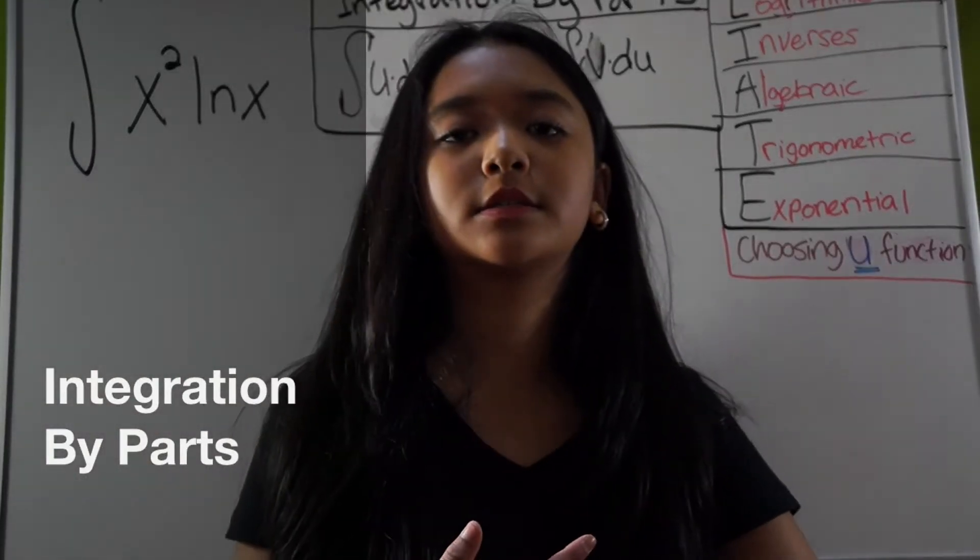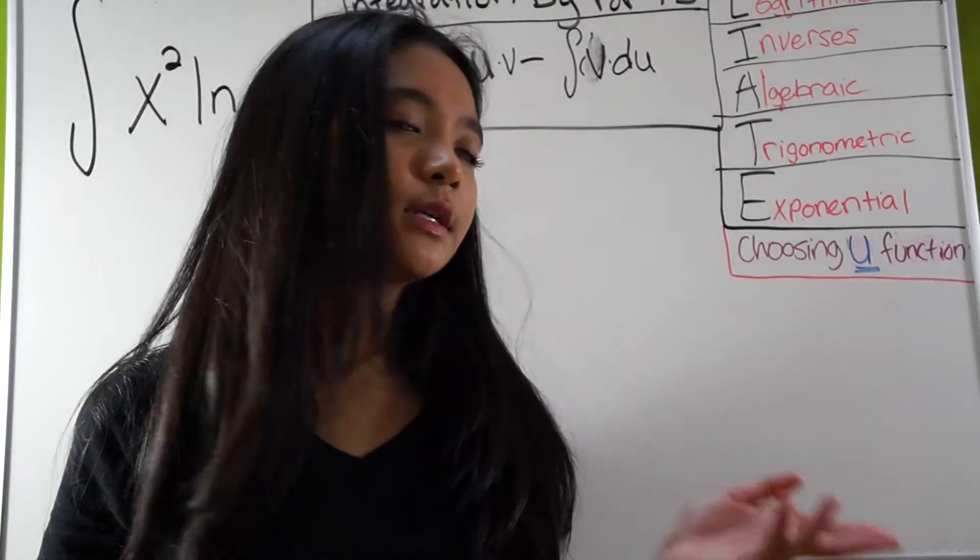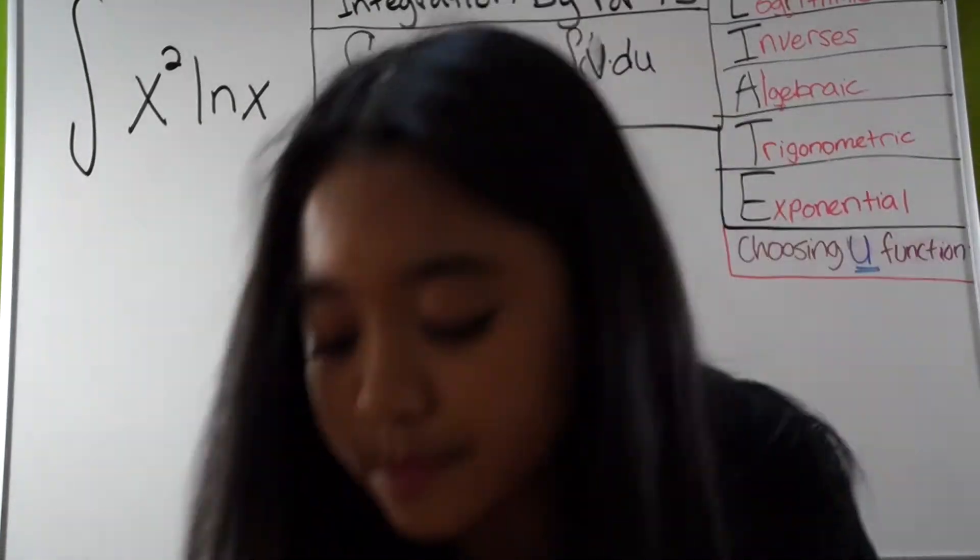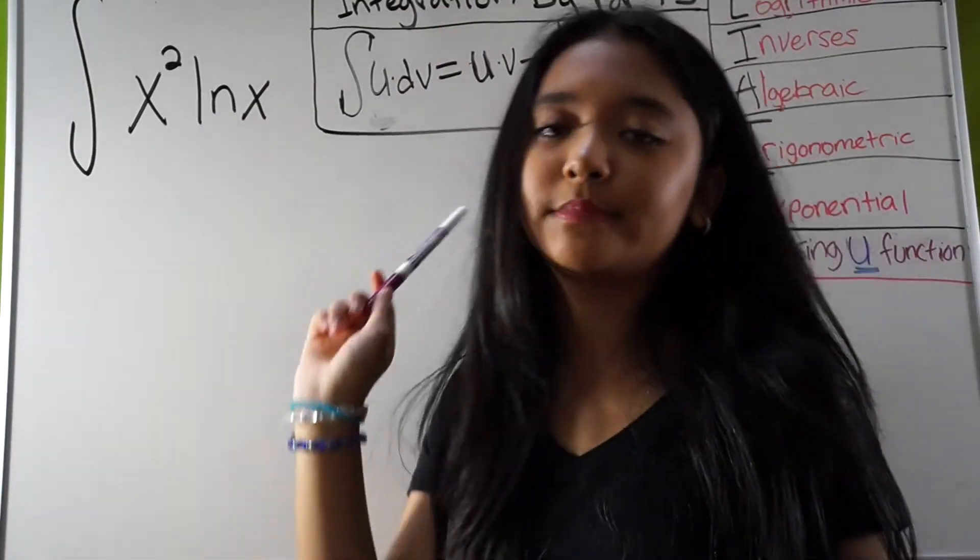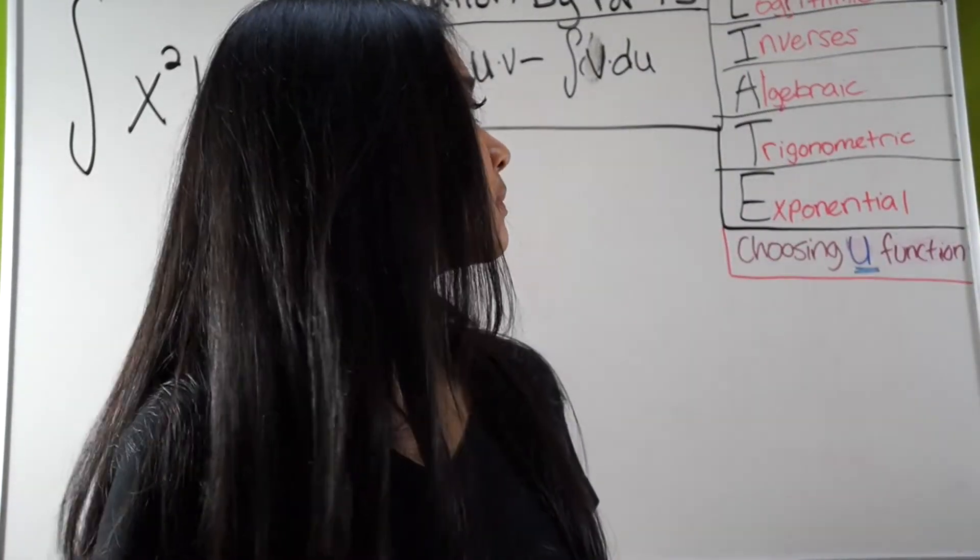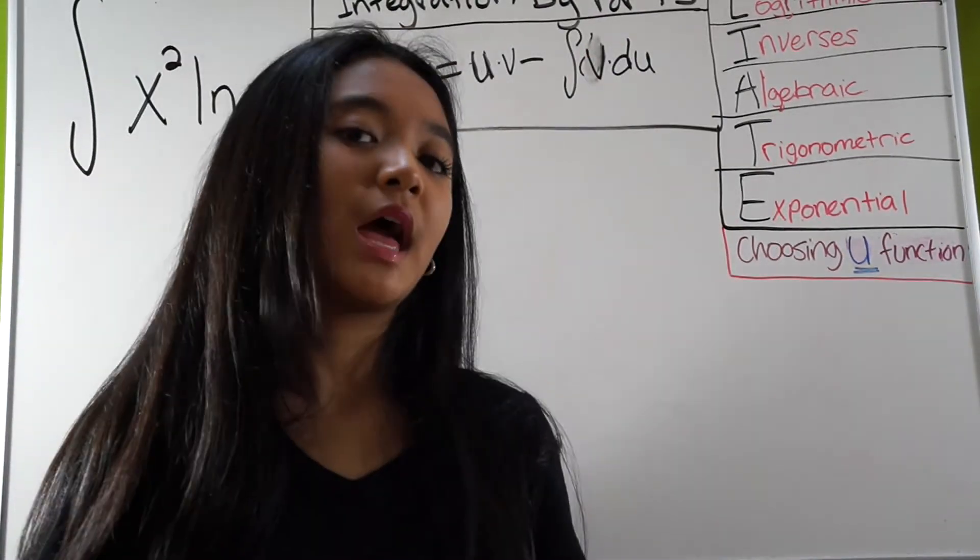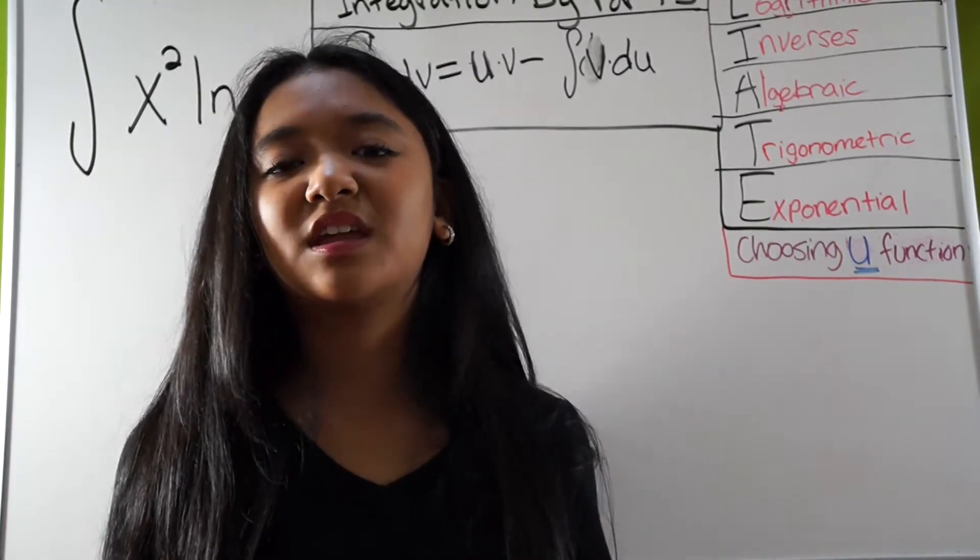Hello, my calculus people. Has this ever happened to you when you have a problem like this? Integral of x squared times ln x. You need to use integration by parts. You gotta learn a bunch of this stuff over here, liate, as they call it. And yet, you can't seem to get help.